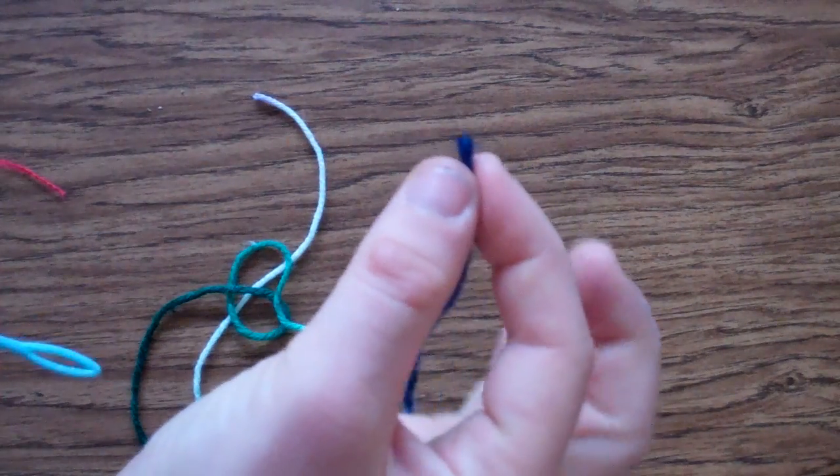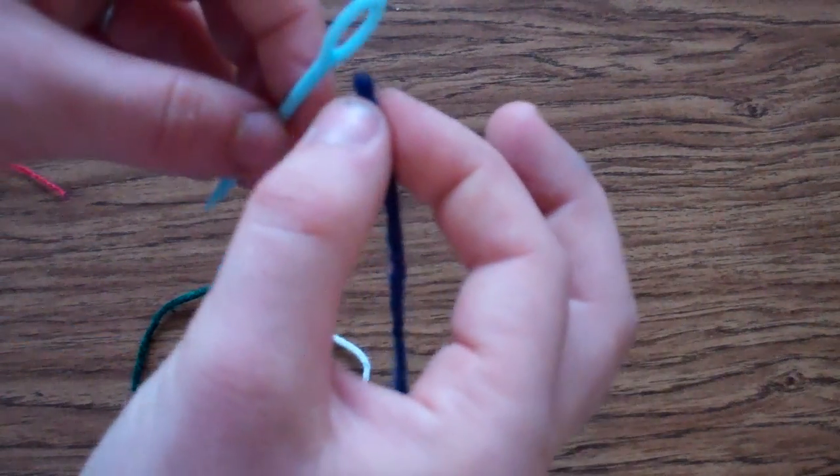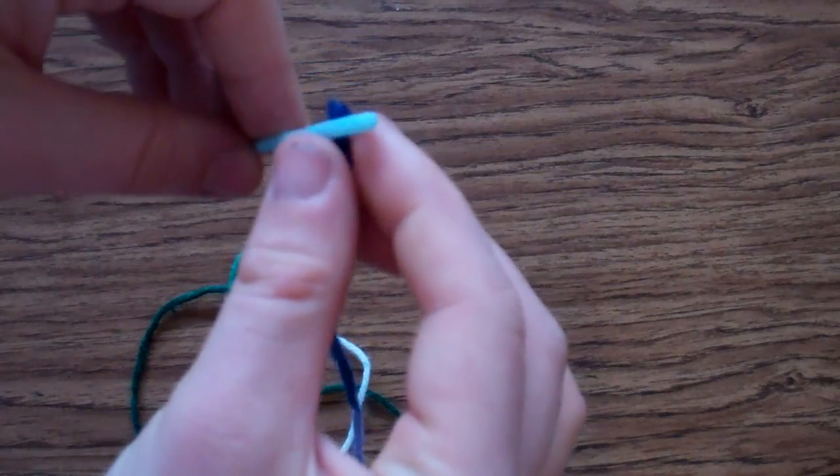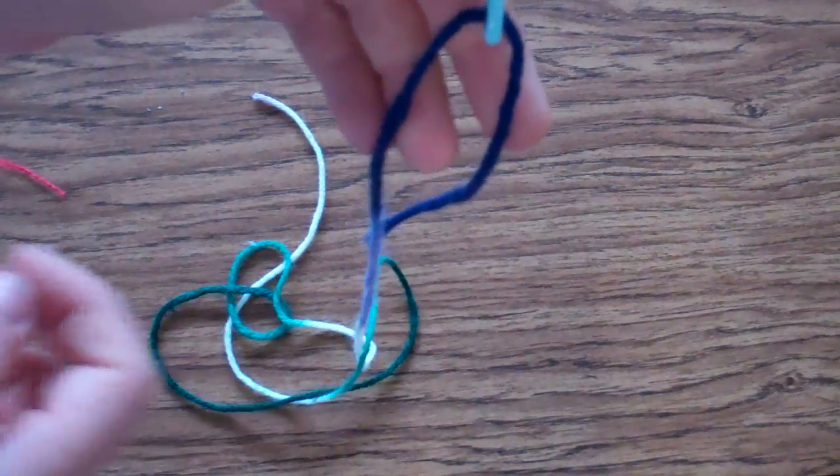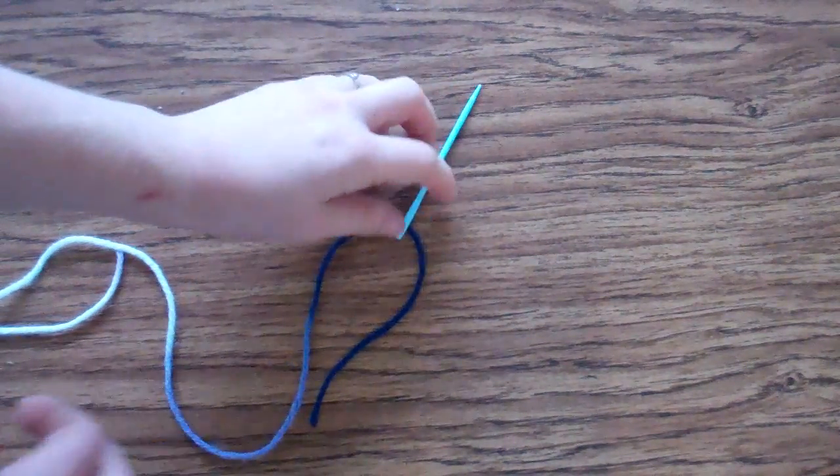I'm going to pinch the very end of the yarn with one finger and push it through that hole. I'm just going to pull it through a little bit. We do not want it double when we weave.